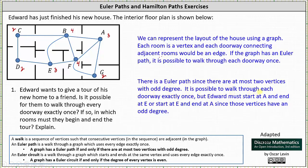This indicates it is possible to walk through each doorway exactly once, but Edward must start at A and end at E, or start at E and end at A, since those vertices have an odd degree. So before we go, let's show a possible Euler path — a possible tour of the house in which the walk goes through every doorway exactly once. It must start and end in the rooms that have an odd degree.